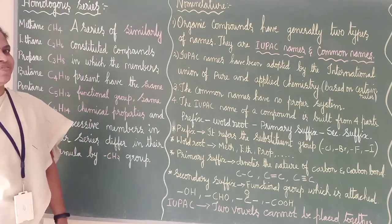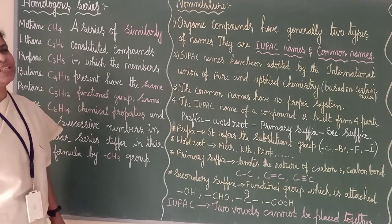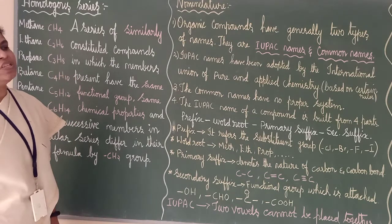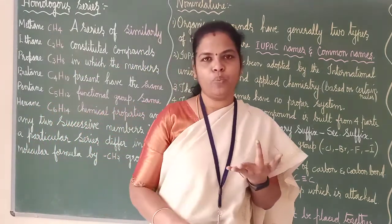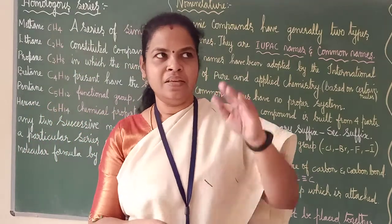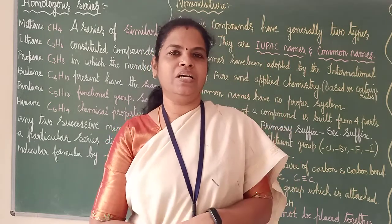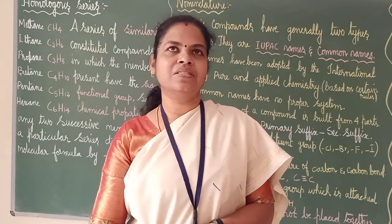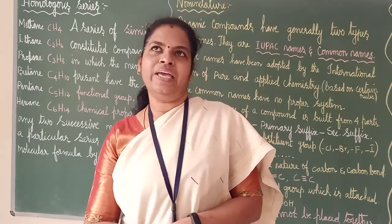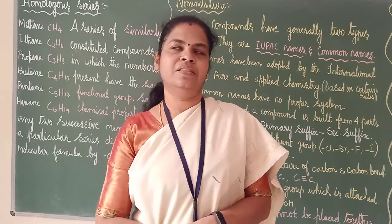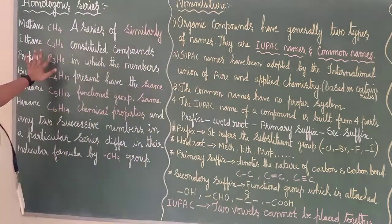First we will see the definition of homologous series. Before that, I will tell you some examples for alkanes: methane, ethane, propane, butane, pentane. The first formula is CH4, then C2H6, third one C3H8. Like that it goes on. I have written for the first six compounds.